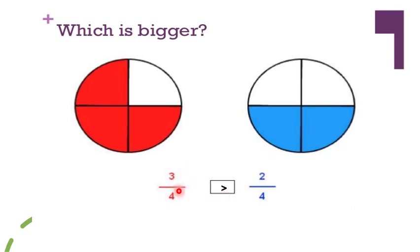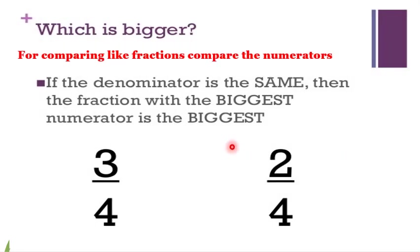We put the greater sign with its mouth open towards the greater number. The conclusion: for comparing like fractions we just need to compare the numerators, because the denominators are already the same. If the denominator is the same, the fraction with the biggest numerator is the biggest. Numerator 3 is bigger than 2, so the fraction 3 by 4 is greater.